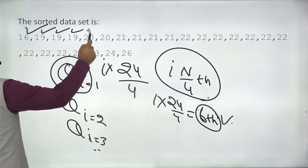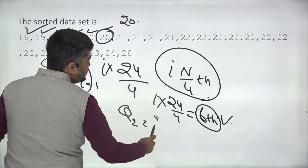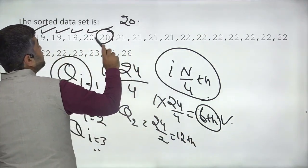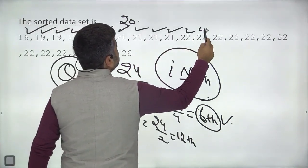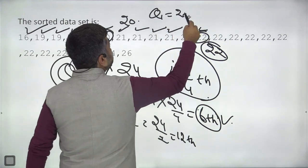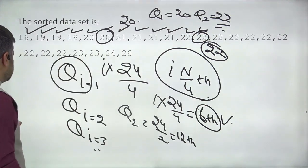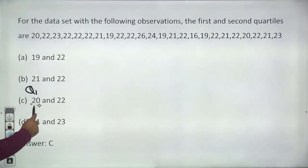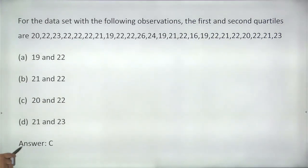For Quartile 1: 1 times 24 divided by 4 equals the 6th observation. Counting through the arranged data, the 6th value is 20. For Quartile 2: 2 times 24 divided by 4 equals the 12th observation. Counting to the 12th value gives 22. So Quartile 1 is 20 and Quartile 2 is 22. Answer is C.